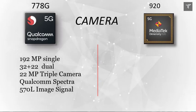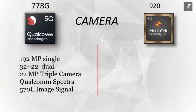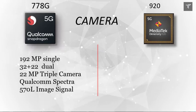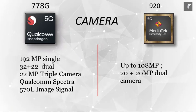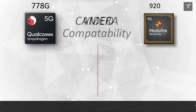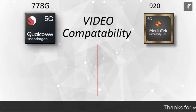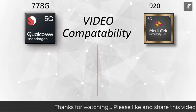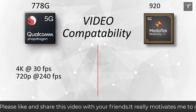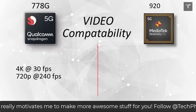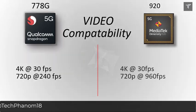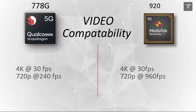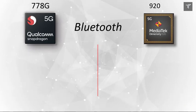For maximum camera resolution, the Snapdragon 778G supports 192 megapixels single camera or 32+22 megapixel dual camera. The Mediatek Dimensity 920 supports 108 megapixels primary camera and 20 megapixels dual camera. Both support 4K video at 30 fps, and the Mediatek Dimensity can also support up to 720p at 960 fps, which is impressive at this price bracket.